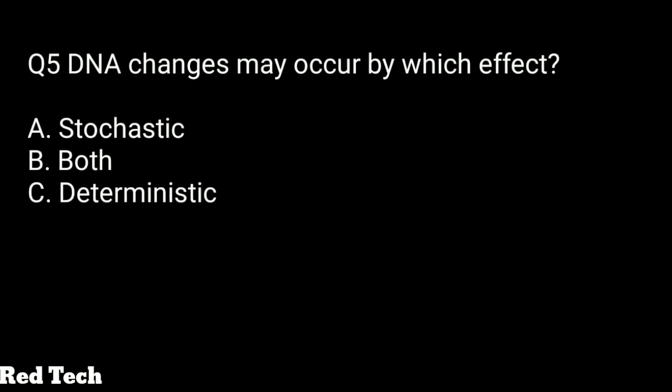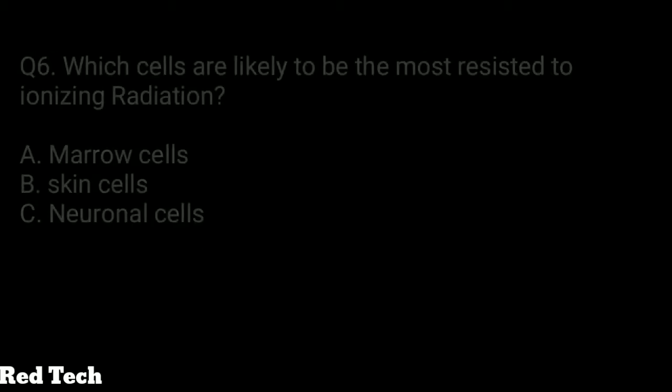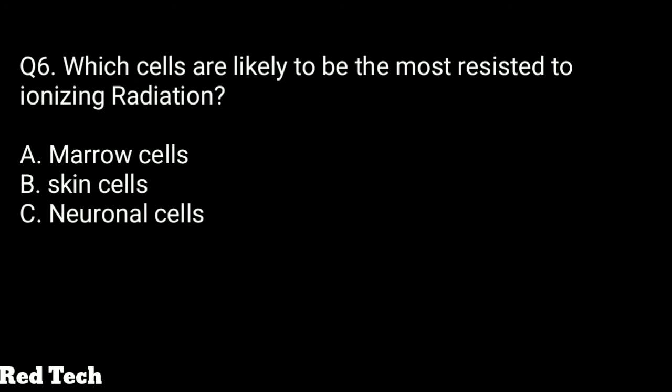Question number five: DNA changes may occur by which effect? The options are stochastic, both, or deterministic. The right answer is stochastic — in the stochastic effect, DNA changes may occur in the human body and also lead to hereditary effects, which affect generation after generation.